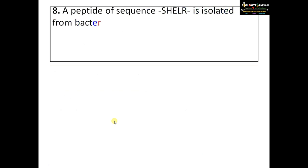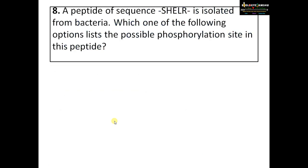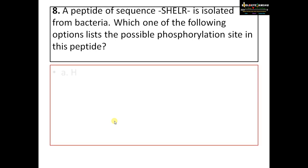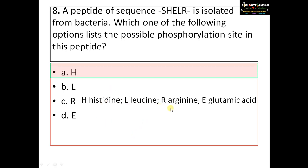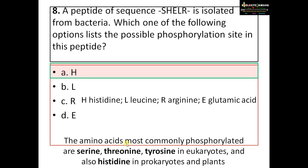Question number eight: a peptide of sequence SHELR is isolated from bacteria. Which option lists the possible phosphorylation site? Options: A) H (histidine), B) L (leucine), C) R (arginine), D) E (glutamic acid). The answer is A — histidine. In eukaryotes, serine, threonine, and tyrosine are the most commonly phosphorylated amino acids, but in prokaryotes histidine is the most common phosphorylation site. Histidine phosphorylation has also recently been reported in humans.